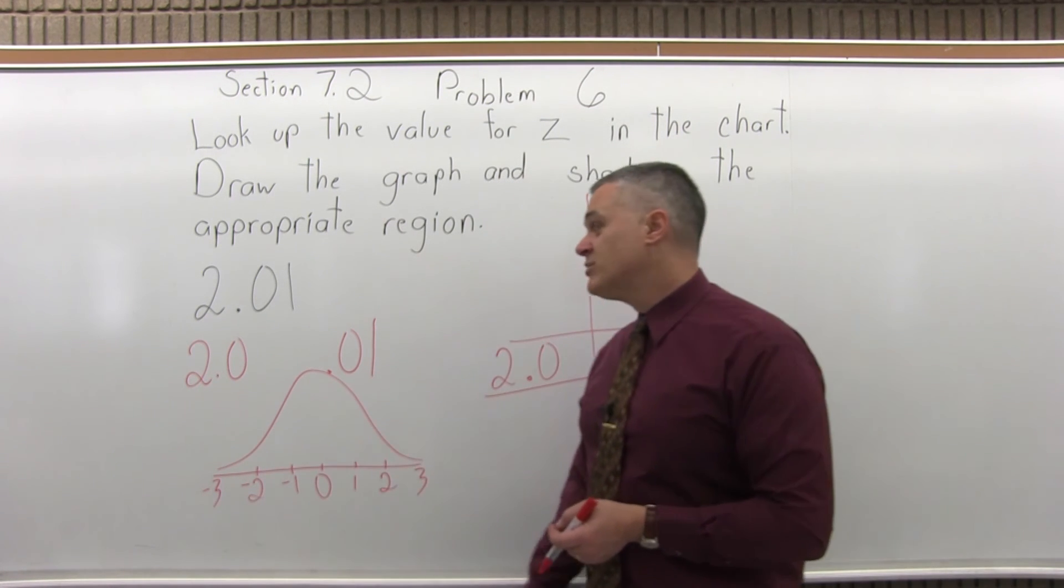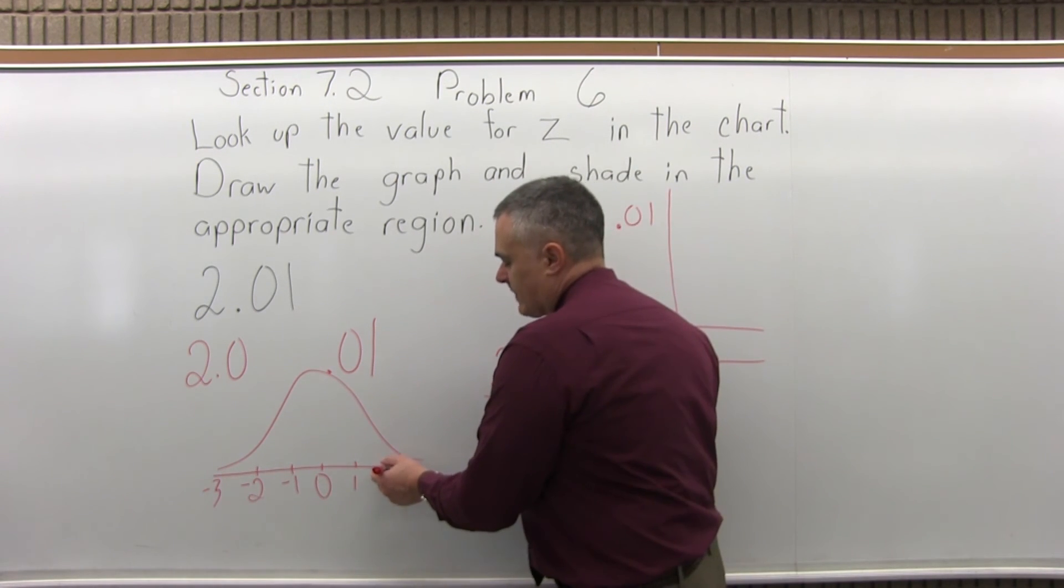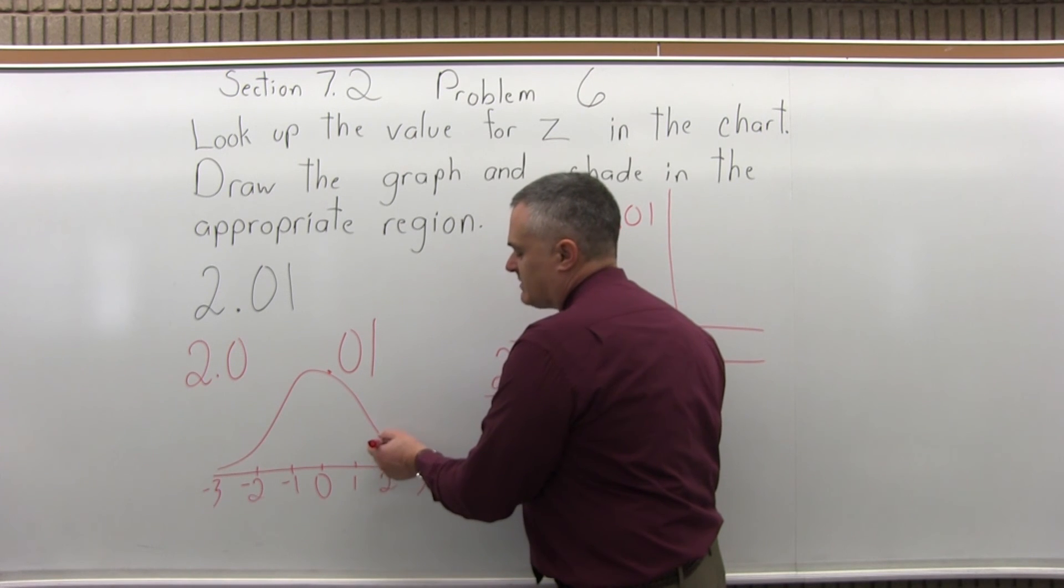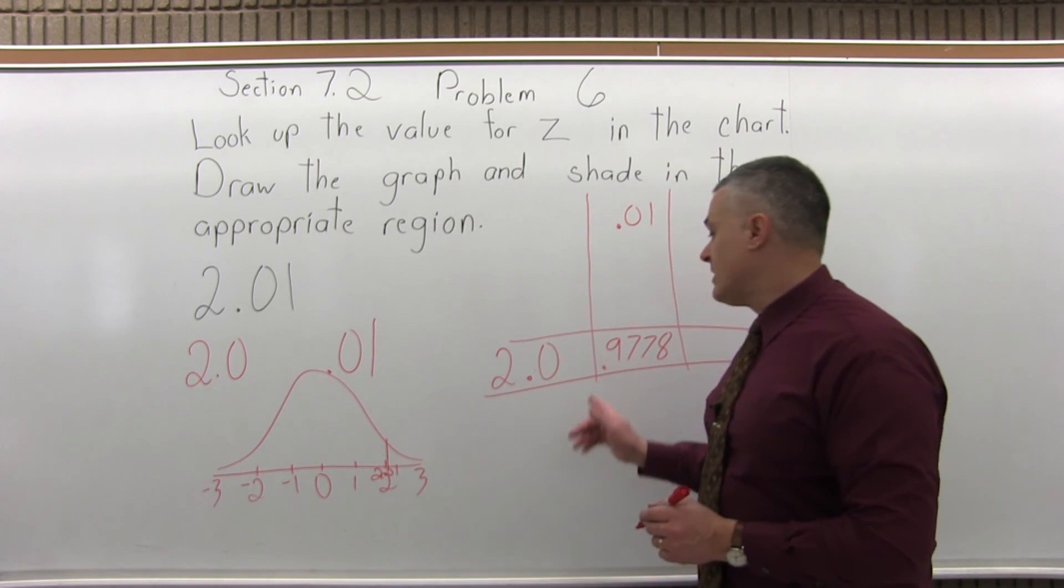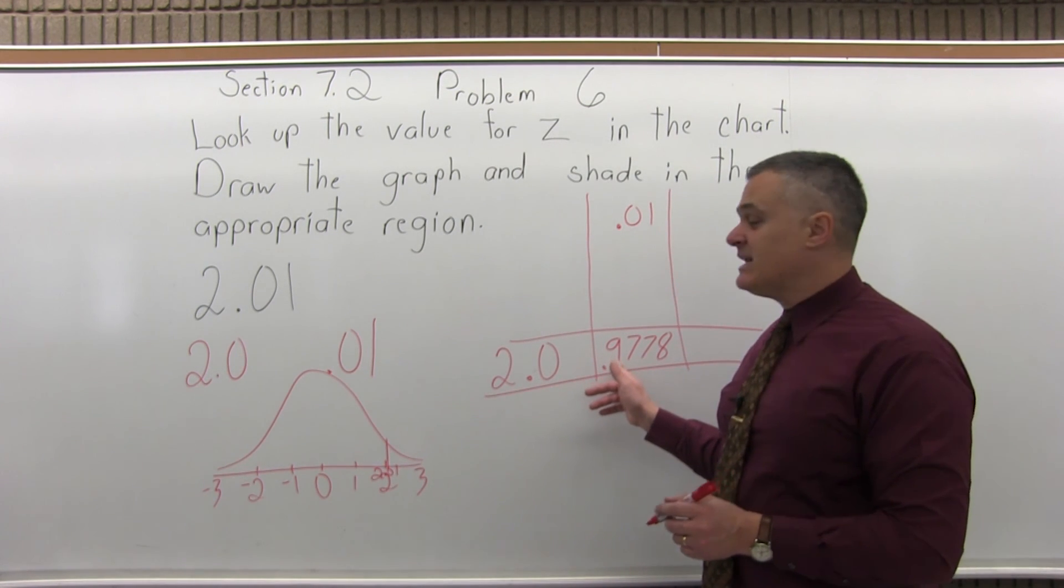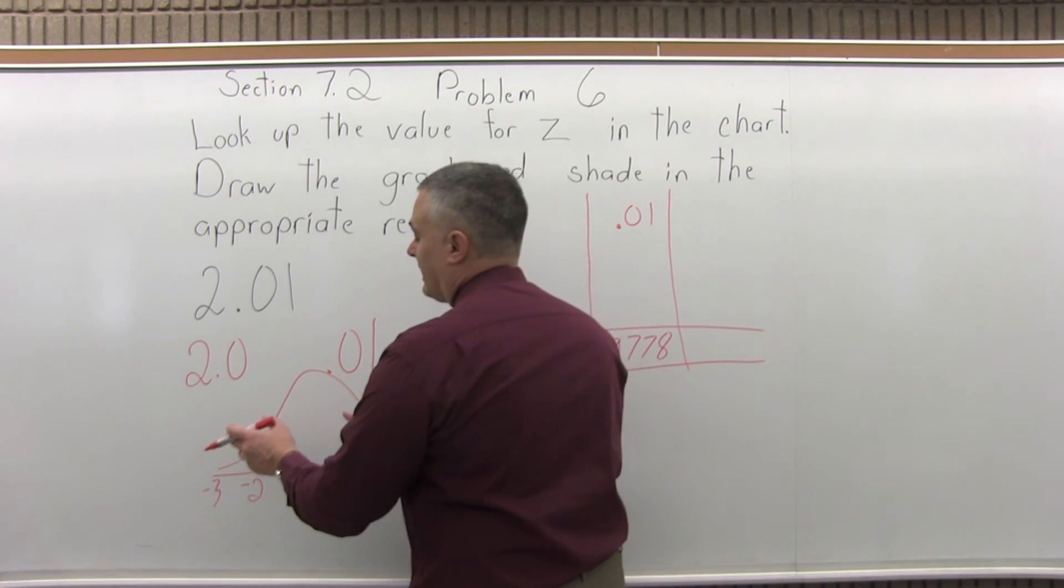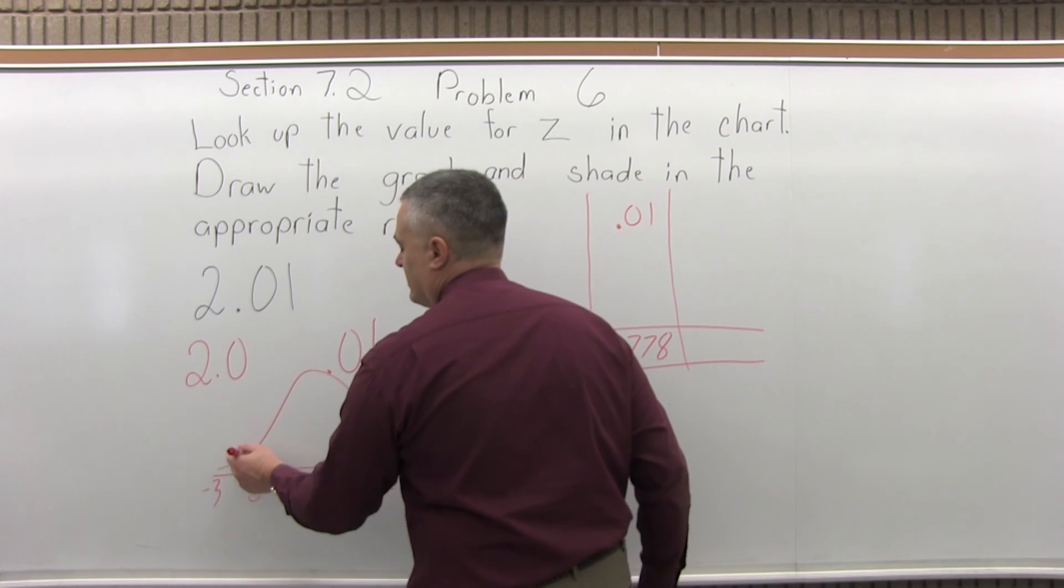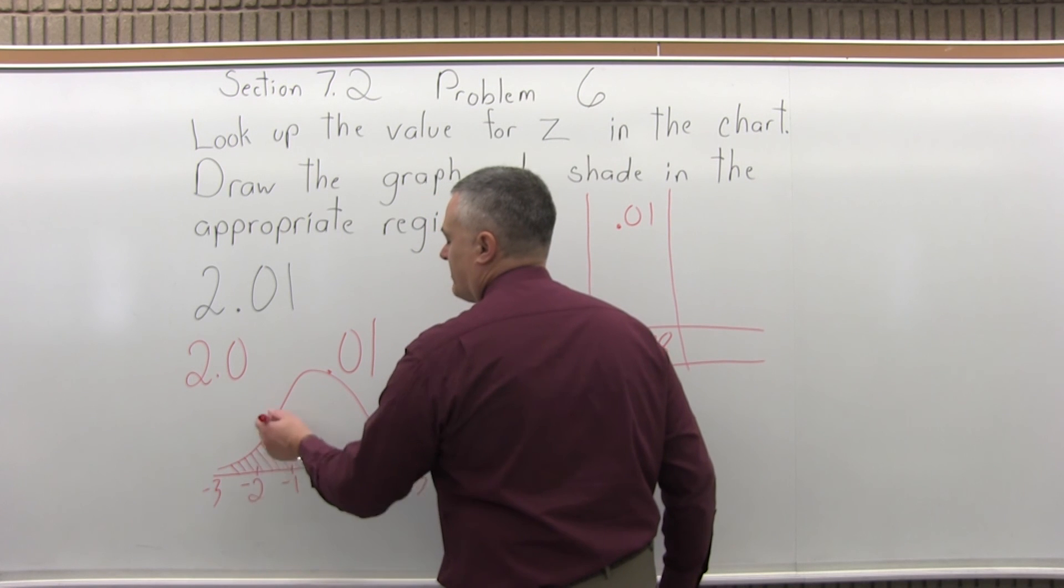So what we looked up, 2.01 is just the tiniest bit past the 2. So 2.01, that's what we looked up. Now the number from the chart, .9778, is the probability of being to the left or less than that value. So I'll shade that area in on my bell curve.